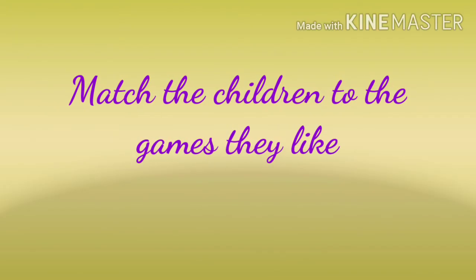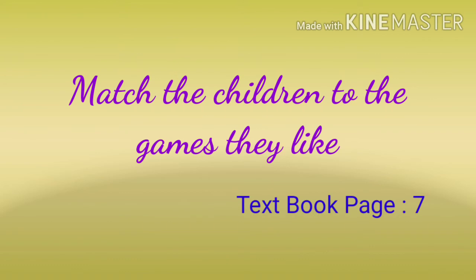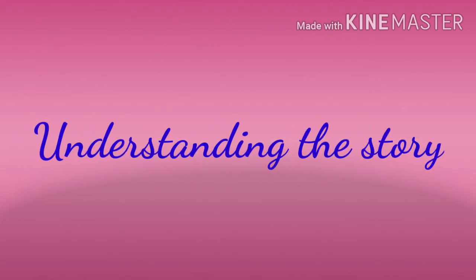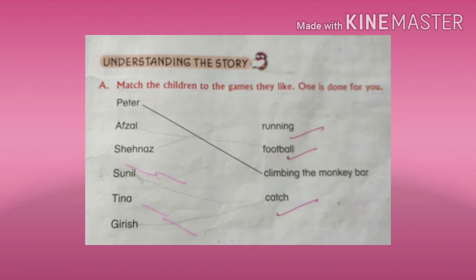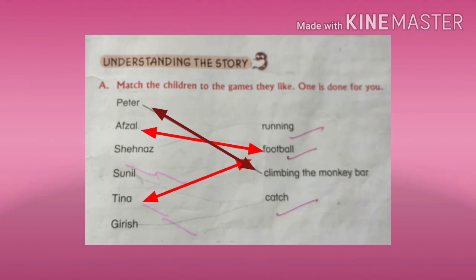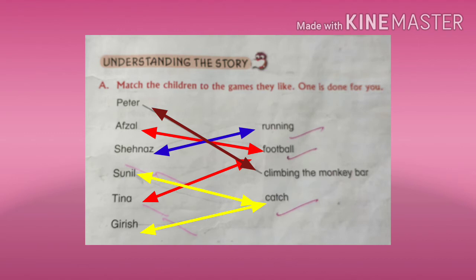Now, let us do the exercise in textbook page number 7. That is, match the children to the games they like. One is done for you. Now look at this exercise, children. Here, names of children are given. You need to match the name of the child to the game he or she likes. Let us see the first one: Peter likes climbing the monkey bar.